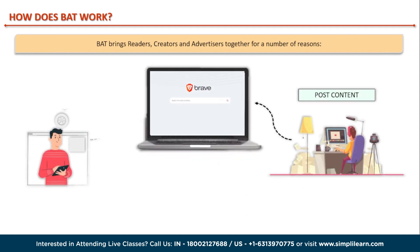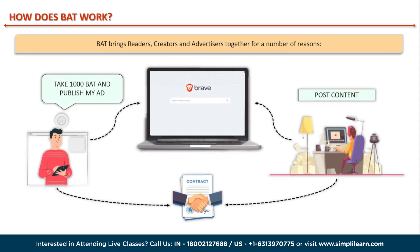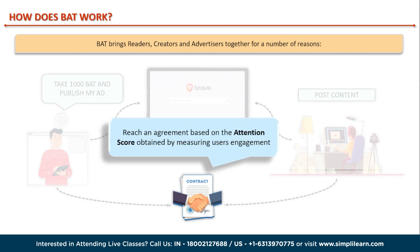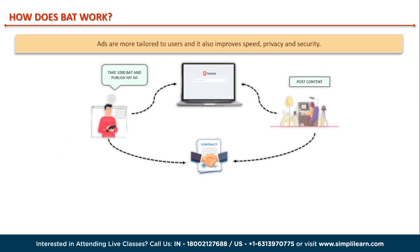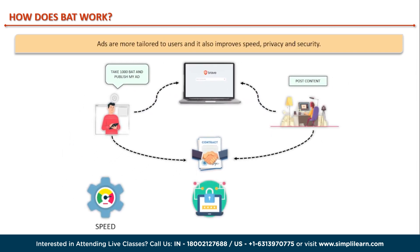For example, any content creator can publish their post on their website. Advertisers then offer a certain number of Basic Attention Tokens for ad space on that content. After that, they will reach an agreement based on their attention score and user engagement. This means that ads are more tailored to users and give advertisers a window of profit, ensuring that Brave users see well-tailored ads while also improving speed, privacy, and security of the browser.